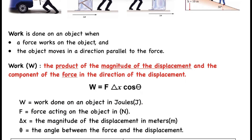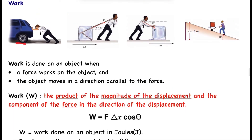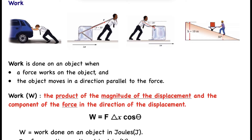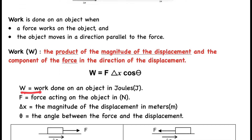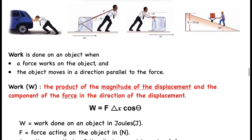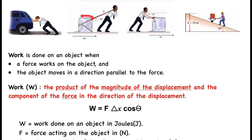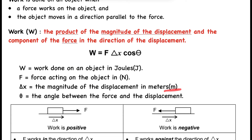Work is energy. When this gentleman is pushing a car, if you calculate the work done and get a positive answer, that means energy has been added to the car. If the answer is negative, that means energy has been taken from the car. Work is an energy, and energy is measured in joules. Force is measured in newtons, and displacement — the change in position — must be in meters.